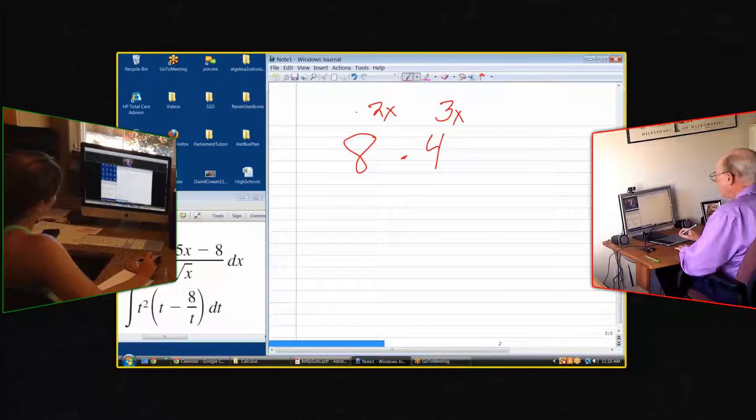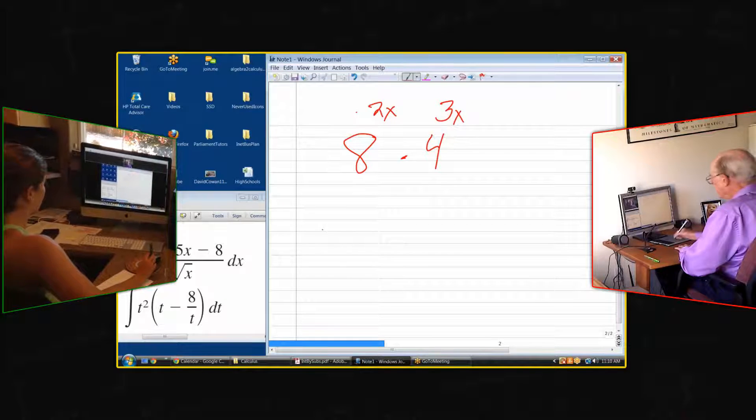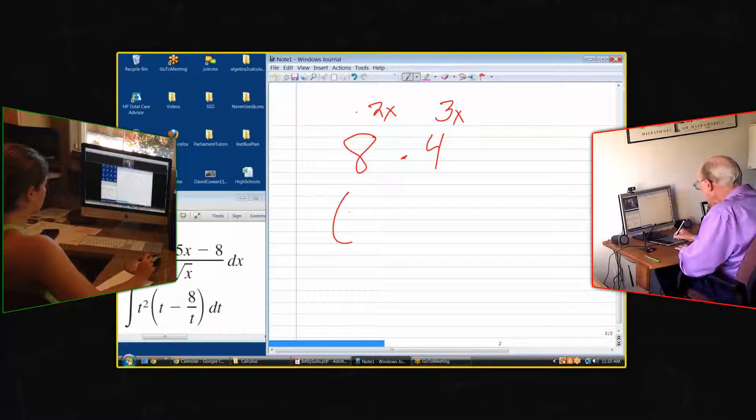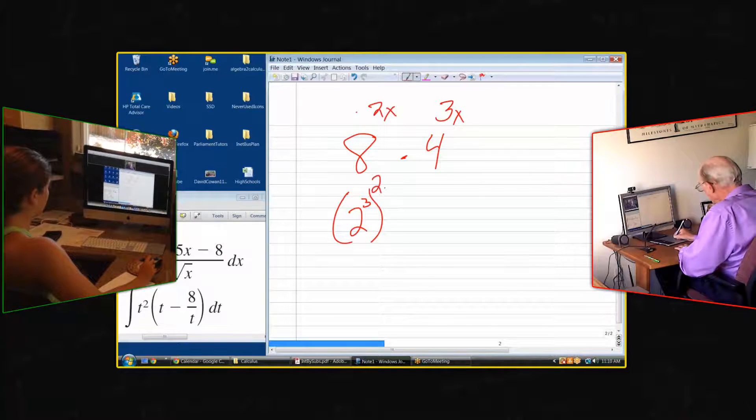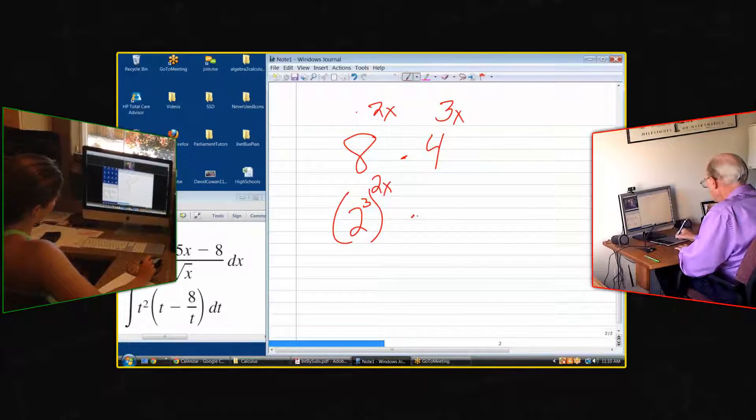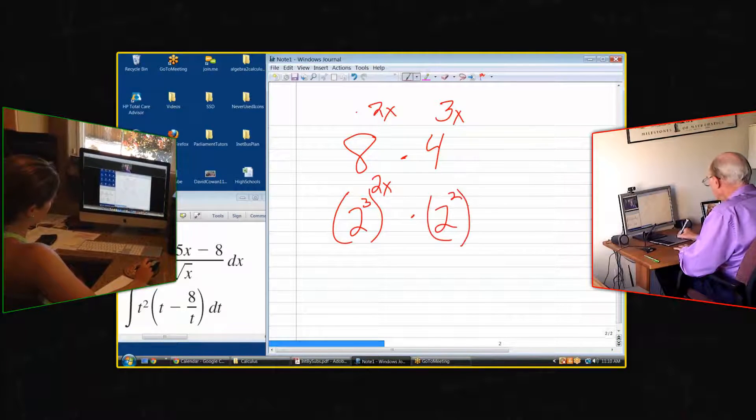We'd start by finding a common base, so it would be 2 to the third. Okay, so we're going to write 8 as 2 to the third in parentheses, 2 to the 2x times 2 squared raised to the 3x.